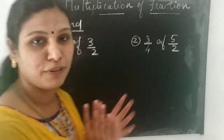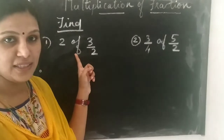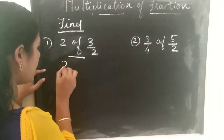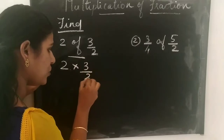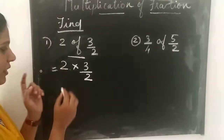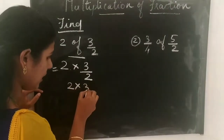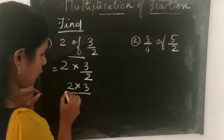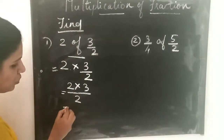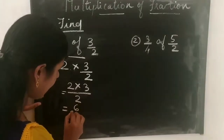Now we are going to the first question. Find 2 of 3 by 2. Here 'of' means multiply, that is 2 of 3 by 2 we can write as 2 into 3 by 2. There is no denominator for 2, so this number is in the numerator. We can write this as 2 into 3 divided by 2. So 2 into 3 is 6, giving us 6 by 2.